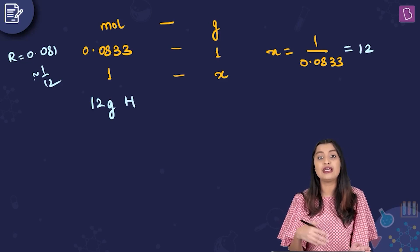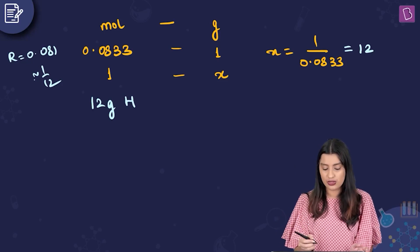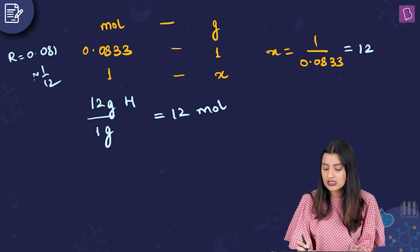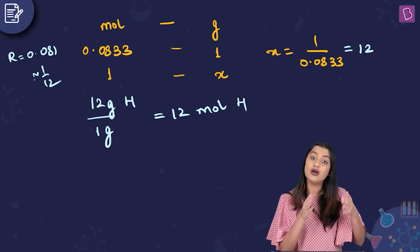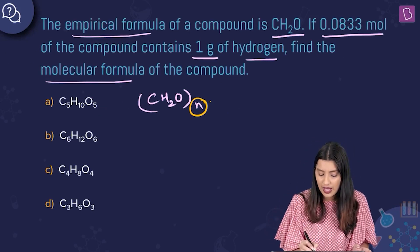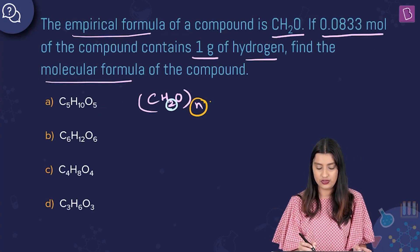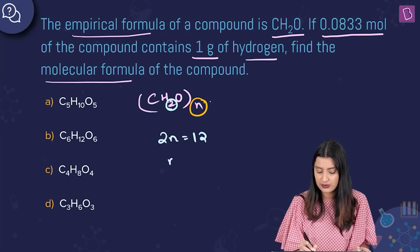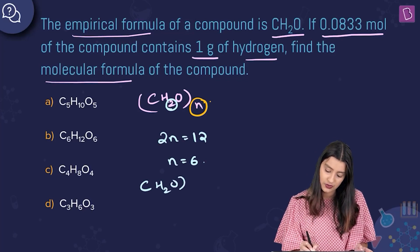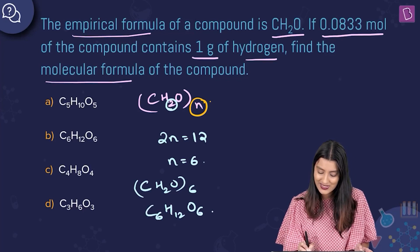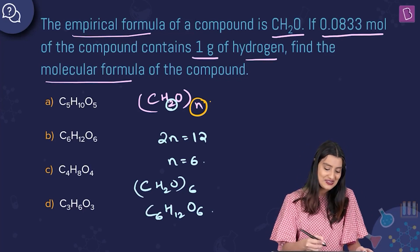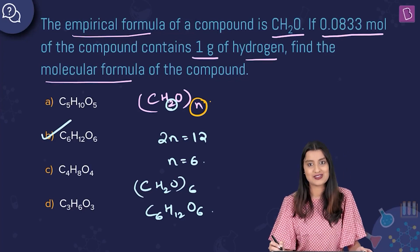12 grams of hydrogen divided by 1 gram per mole gives 12 moles of hydrogen atoms in 1 mole of the compound. The empirical formula CH₂O has 2 moles of hydrogen, so 2n = 12, which means n = 6. The molecular formula is C₆H₁₂O₆ — commonly known as glucose. Option B, C₆H₁₂O₆, is the right answer.